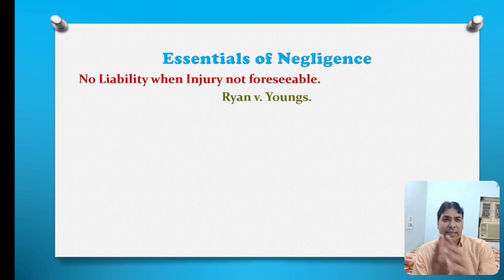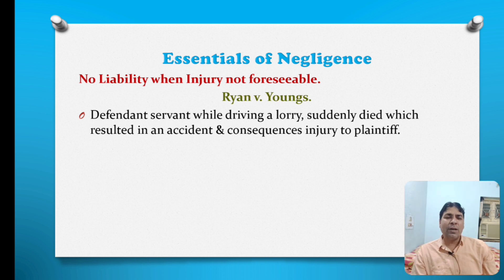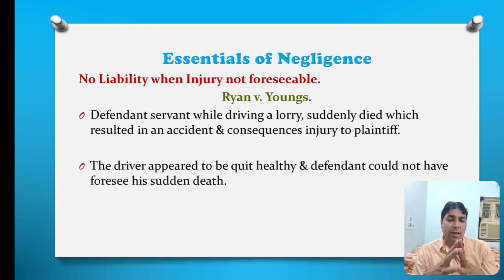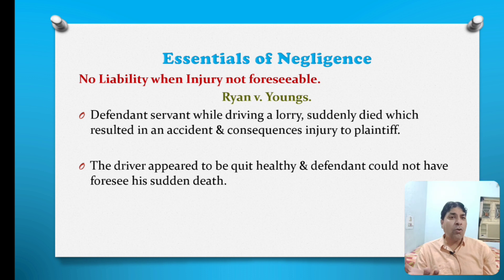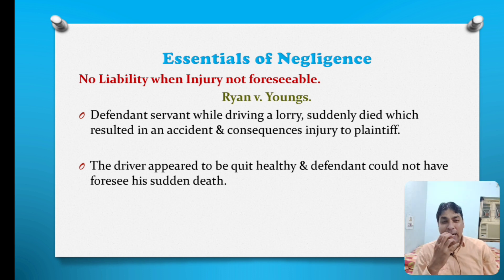Another case is Ryan v. Young. In this case, the defendant's servant while driving a lorry suddenly died, which resulted in an accident and consequent injury to the plaintiff. The driver appeared quite healthy and the defendant could not have foreseen his sudden death. If the driver is healthy, how is it possible to predict his death? So the injury was not foreseeable in this particular case, and that is why the court did not hold the defendant liable.